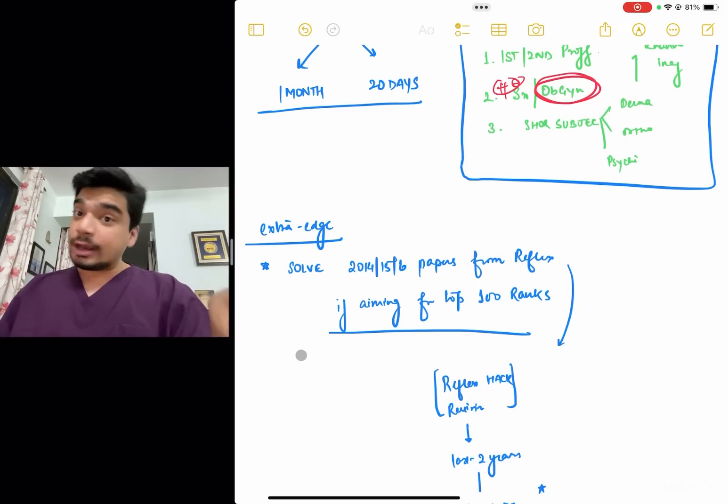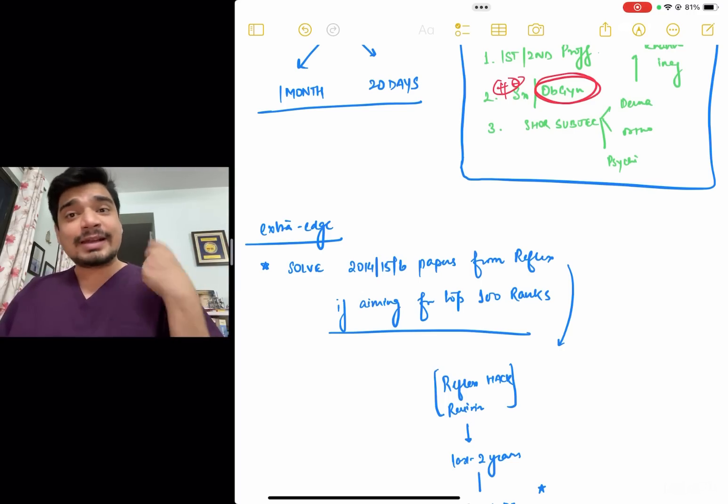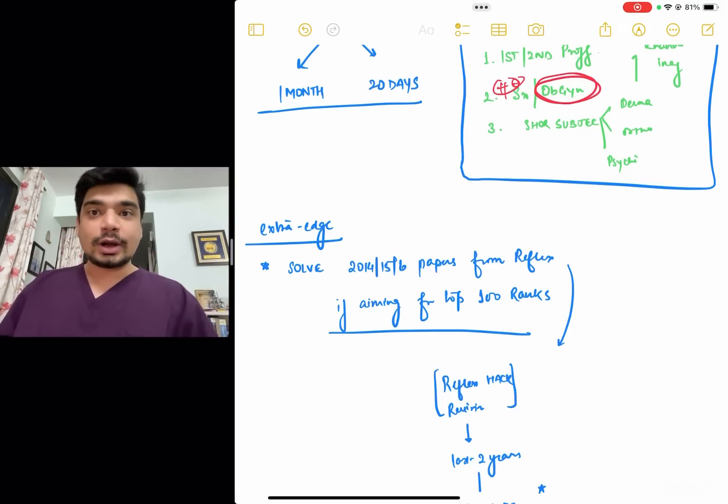Any person who has come here in AIIMS, I meet a lot of people who come to AIIMS, especially in the past one year, two years, they all have said that solving those two, three extra papers gave them an extra confidence and that extra edge that reflected in the exam and got them a top 100 or a top 200 rank.